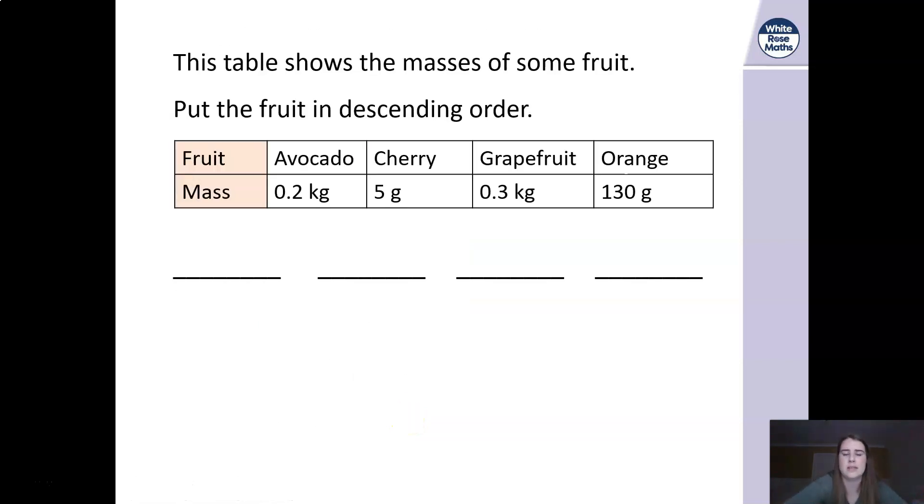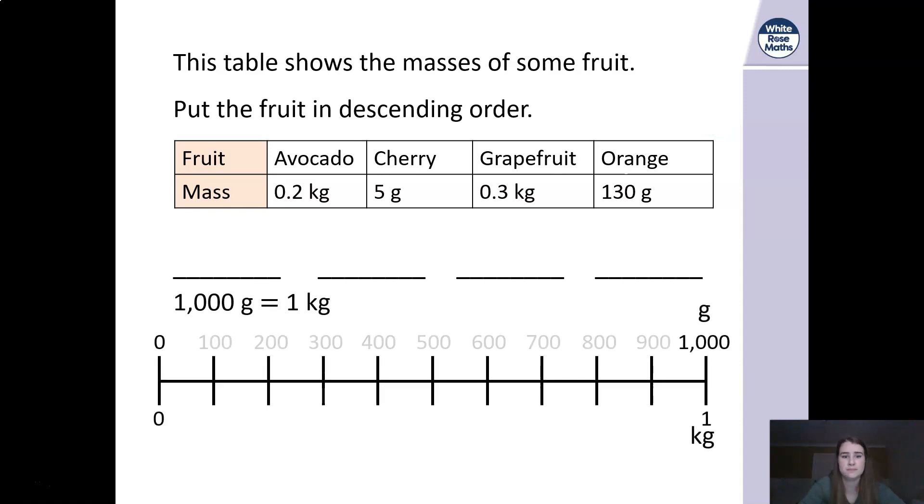So last question here then, this is an opportunity for you to have a go at this on your own. We've got the table shows the masses of some of these fruit. What I would like to do is put the fruit in descending order. You need to think about what you think descending order means. Is it going to go from the biggest to the smallest or from the smallest to the biggest? Here is a number line to help you. I want you to pause the video and I want you to - you might have to convert some of these - put them in descending order for me.